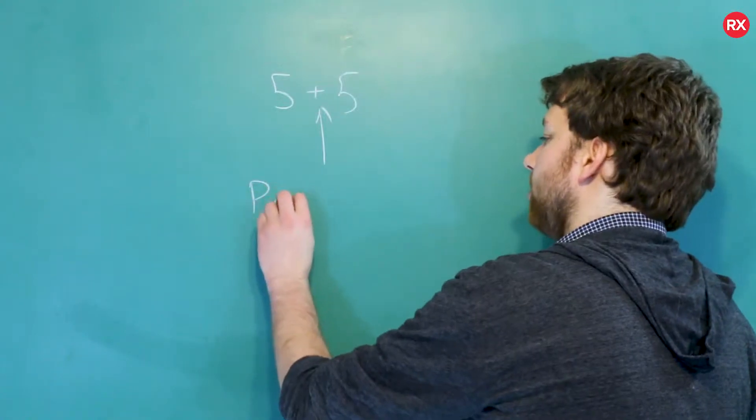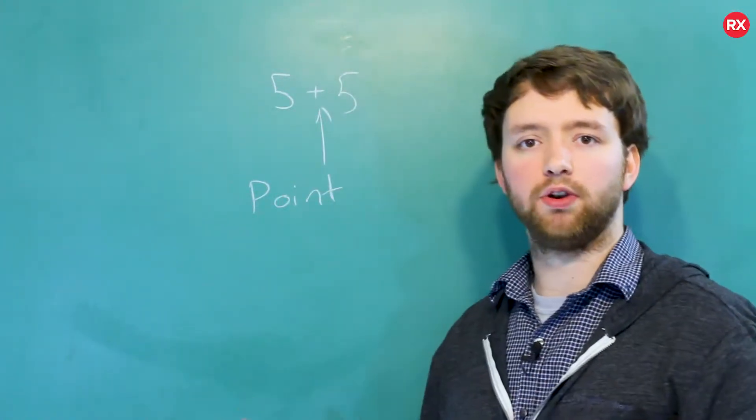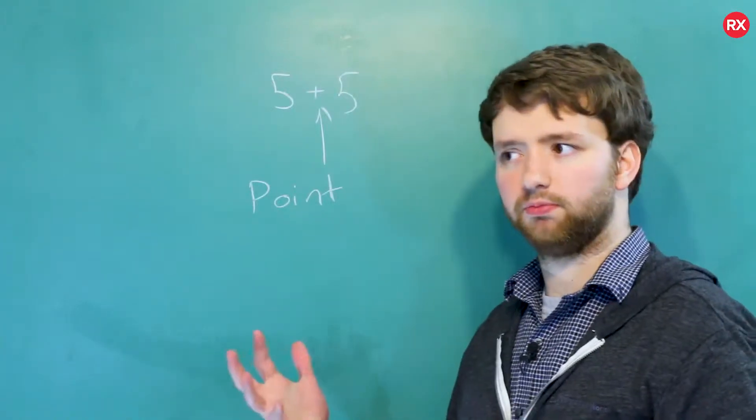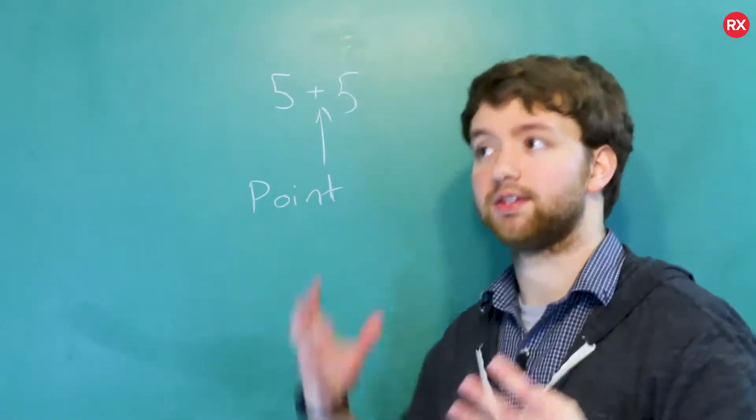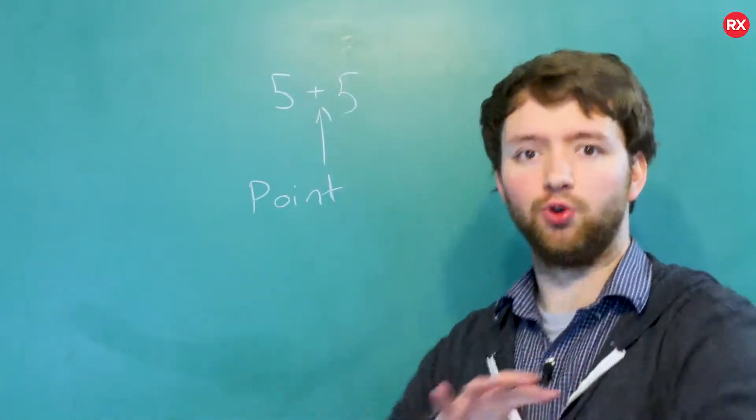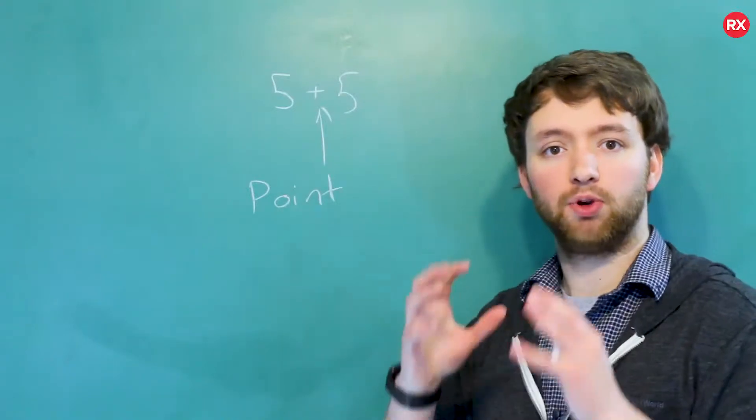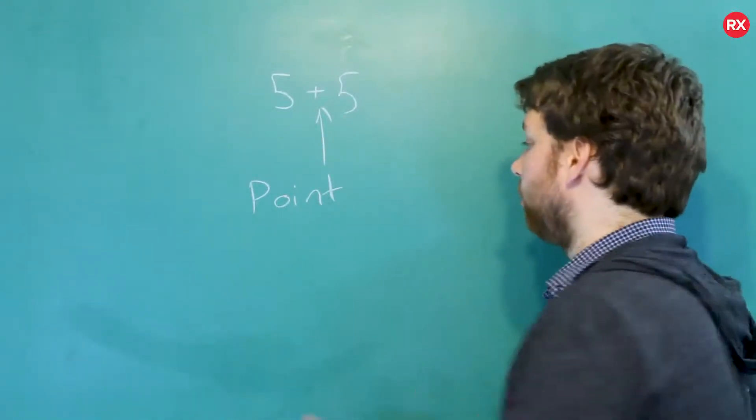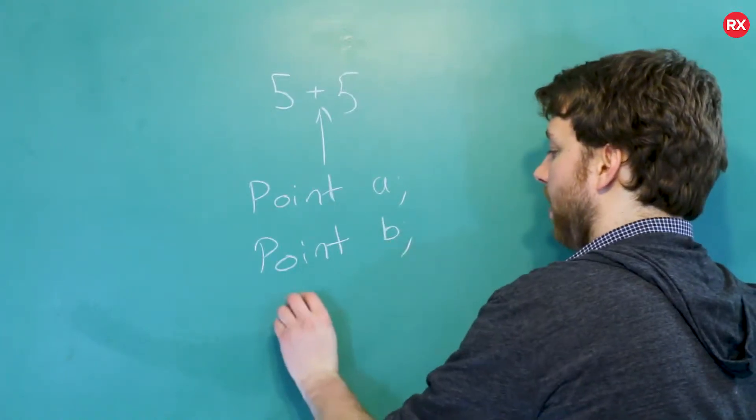Let's say we defined a point type which contained an X and a Y. So basically coordinates. We defined a point which has an X member and a Y member. Now let's say we created two of them, point A and point B, and we do A plus B.